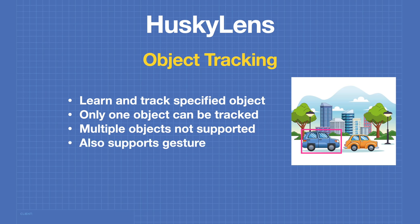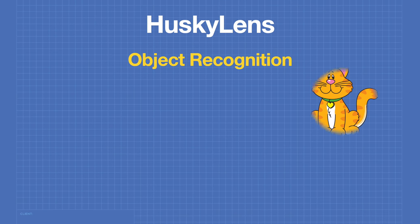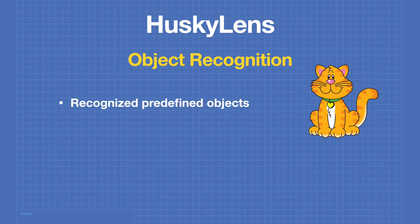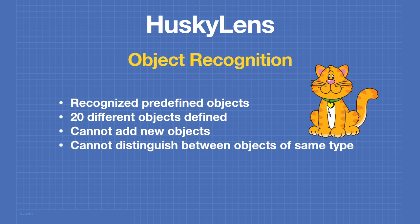In object tracking mode the Husky Lens also supports gesture detection. In object recognition mode it can recognize 20 different predefined objects — you cannot add new objects, and it can't distinguish between objects of the same type. For example, two pictures of different cats will both simply be recognized as a cat.